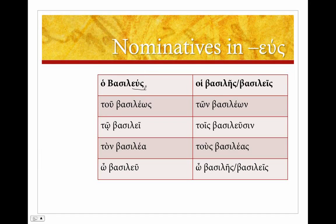The reason I make this distinction is that you actually don't see the epsilon-upsilon in very many cases. More often we just see the epsilon. So, ho basileus — this means 'king' — tu basileos. Notice we've got that quantitative metathesis, just like we did in polis. Tu basileos, to basilei — so we've got a contraction there — ton basileia. And then the vocative: o basileu.